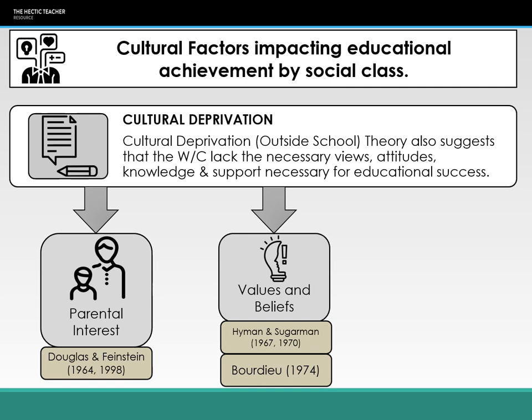Bourdieu suggested that each class possesses its own cultural framework — what he refers to as habitus — which shapes views, beliefs and values. Bourdieu suggests that because schools have a middle class habitus, being a middle class institution, it gives middle class students an advantage while simultaneously enacting symbolic violence upon the working class. This symbolic violence means saying their culture and habitus is less than or inferior to the middle class, and that they should be aspiring to middle class values.